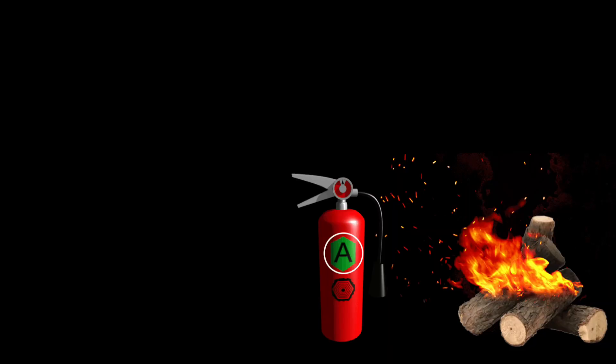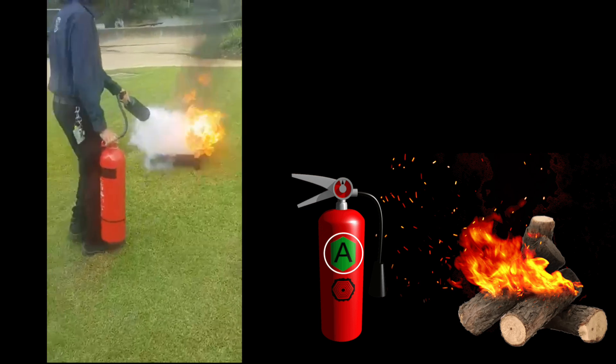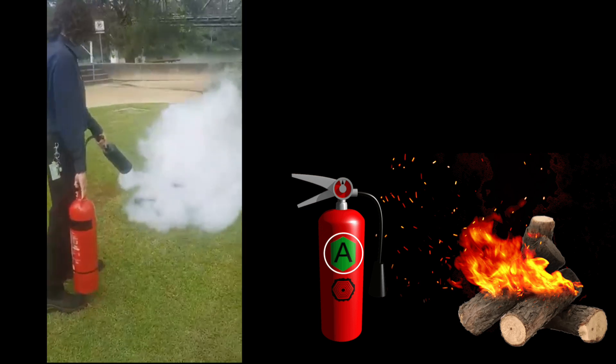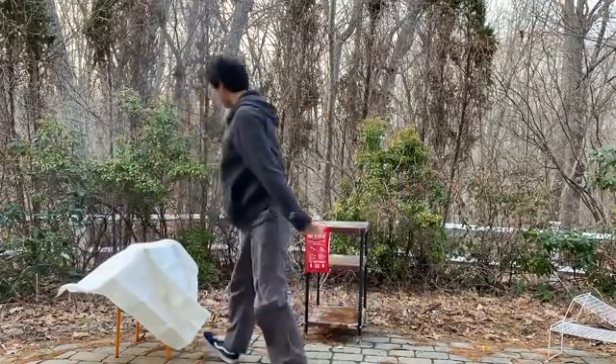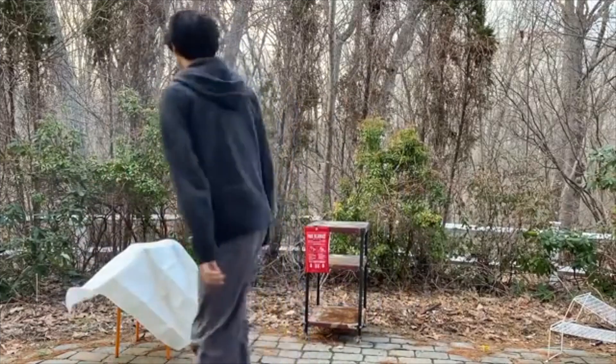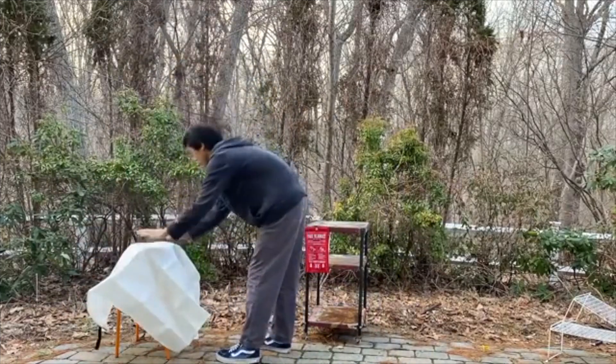Class A fires can be extinguished by depleting the fire of either the oxygen or fuel source and are typically fought with water or foam agents, but at smaller sizes can also be put out by starving it of oxygen by completely covering it with a lid, fire blanket, or other similar tools.